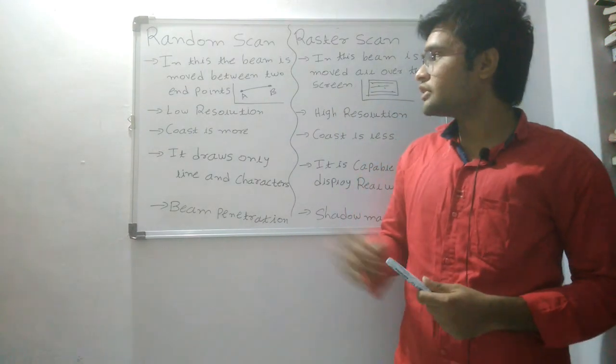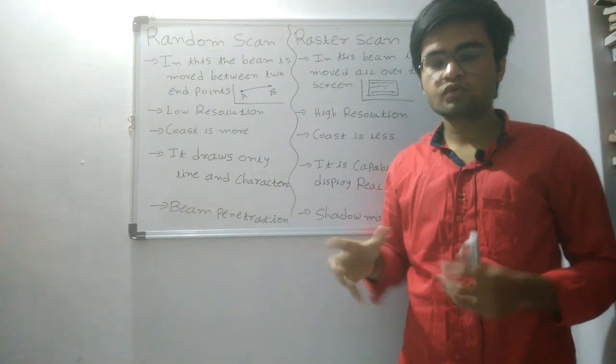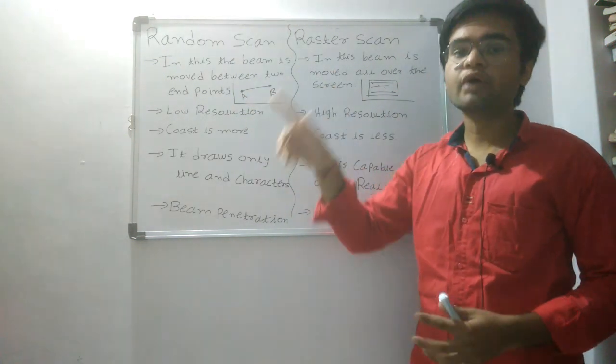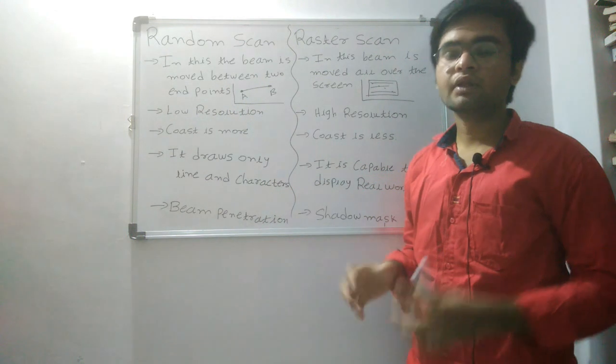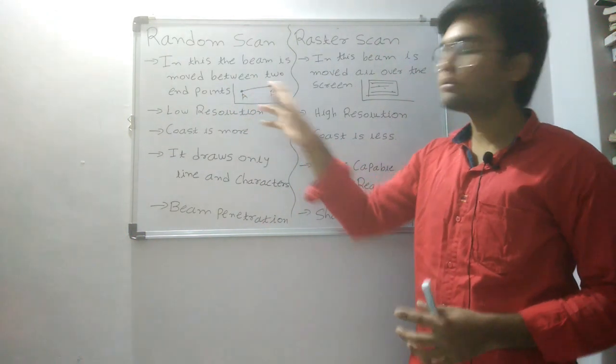The first difference is in this the beam is moved between two endpoints. If we want to draw a line between two endpoints, for example A to B, then it must show a path to us. This line is nothing but our path.